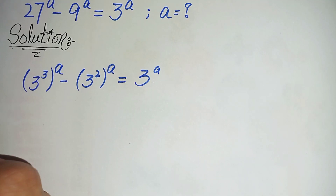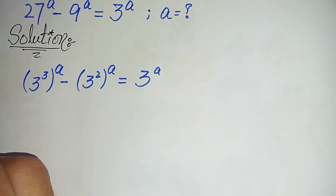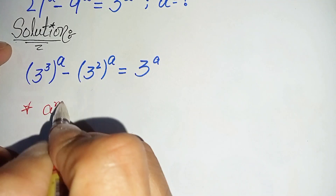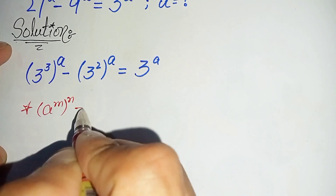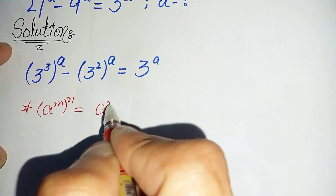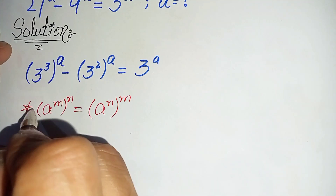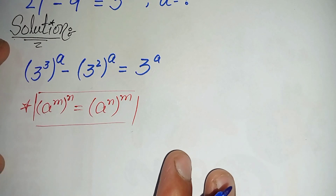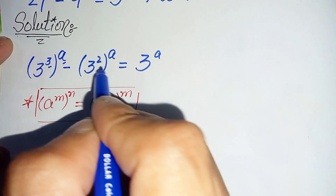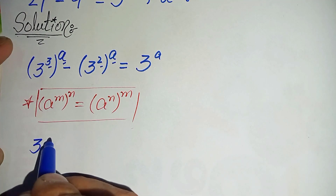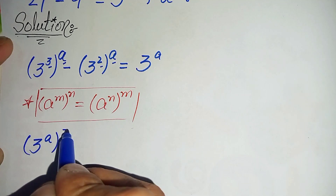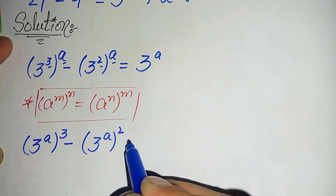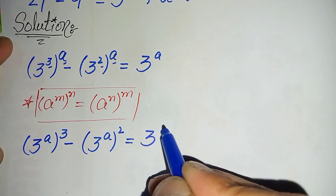Here in the left hand side, we will use a famous exponential math property: a raised to power m raised to power n can also be written as a raised to power n raised to power m. So by using this exponential property, interchanging the position of these powers, it will become 3 raised to power a whole cube minus 3 raised to power a whole square is equal to 3 raised to power a.